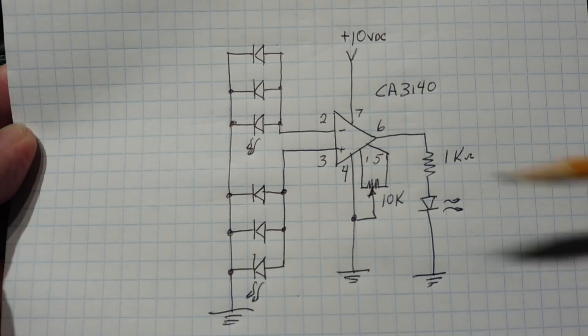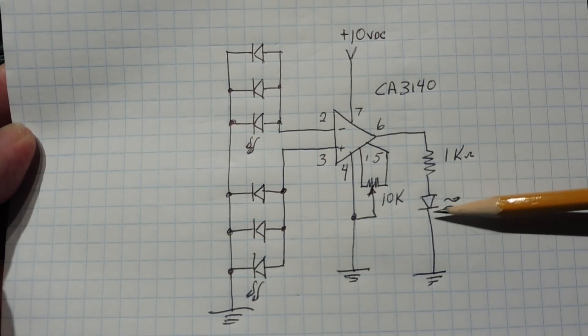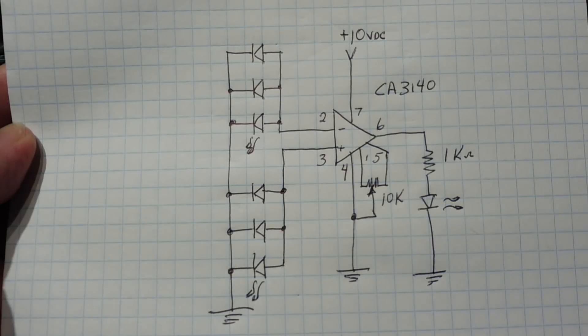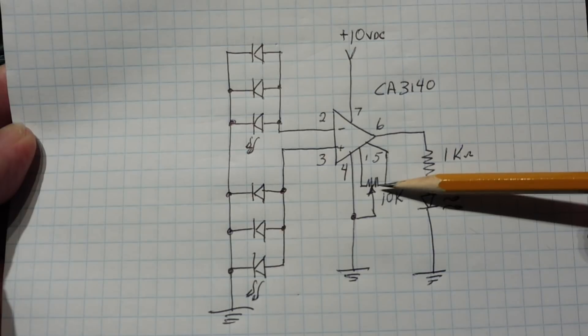Now the output of the op-amp, pin 6, is driving this LED, and this LED will come on when the circuit is triggered. Now I have a pot across pin 1 and 5 of the op-amp, a 10k pot, that's my offset null pot, and that sets the trigger point.